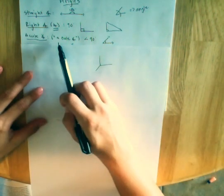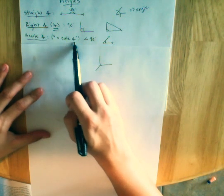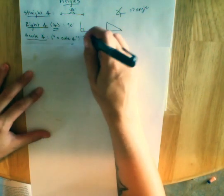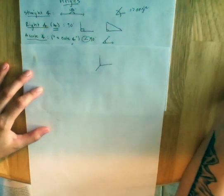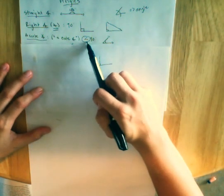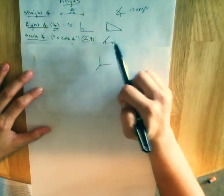Acute angle. I learned to remember it as a cute angle. It is less than 90 degrees. Again, I am using symbols to be able to make note taking faster. The cute angle is less than 90 degrees, which looks like this.